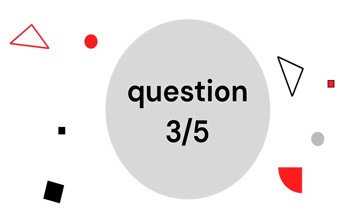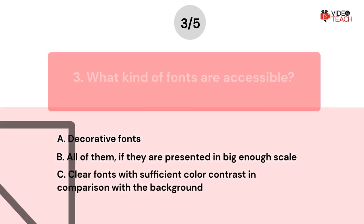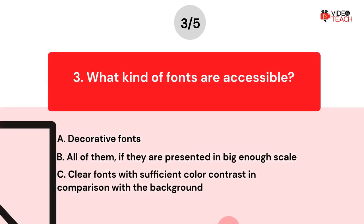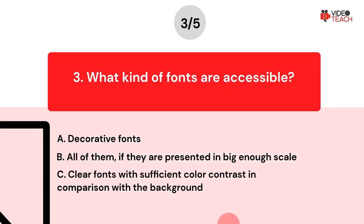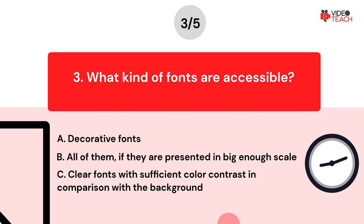Question number three. What kind of fonts are accessible? Option A: Decorative fonts. Option B: All of them, if they are presented in big enough scale. Option C: Clear fonts with sufficient color contrast in comparison with the background. Now you have about 15 seconds to think about your answer.